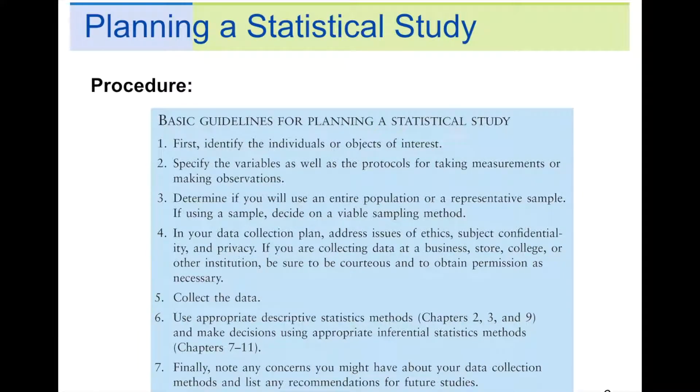Procedure for that. First thing you want to do is identify the individuals or objects of interest. You want to figure out who you're studying. Then, second step, figure out the variables and how you're going to observe or take measurements of those variables. Step three, are you going to use a population or a sample? And if you are, which sampling method are you going to use? Step four, you want to address things like ethics, confidentiality, privacy, how are you going to deal with those? And also, getting permission slips if necessary. A lot of studies, you need to get a permission slip first, especially if you're dealing with underage, you need a permission slip from their parents.